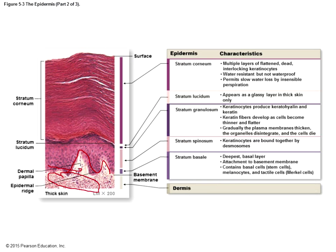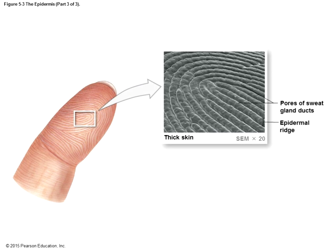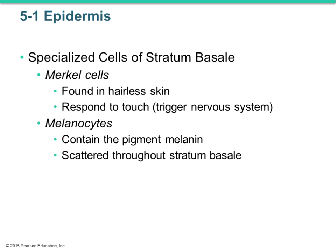Since those epidermal ridges and dermal papillae are unique to each individual, those epidermal ridges are actually the basis of fingerprinting, which has become a very useful tool in criminal justice and identifying individuals. With thick skin you can see the epidermal ridges that give a unique pattern to each individual.